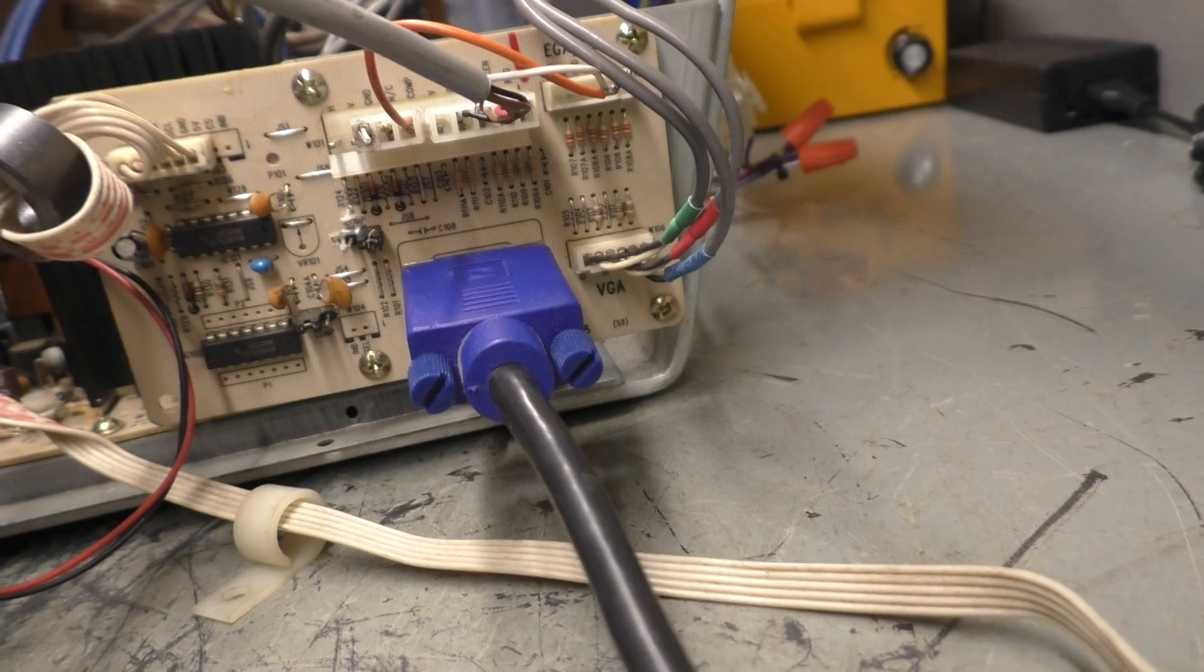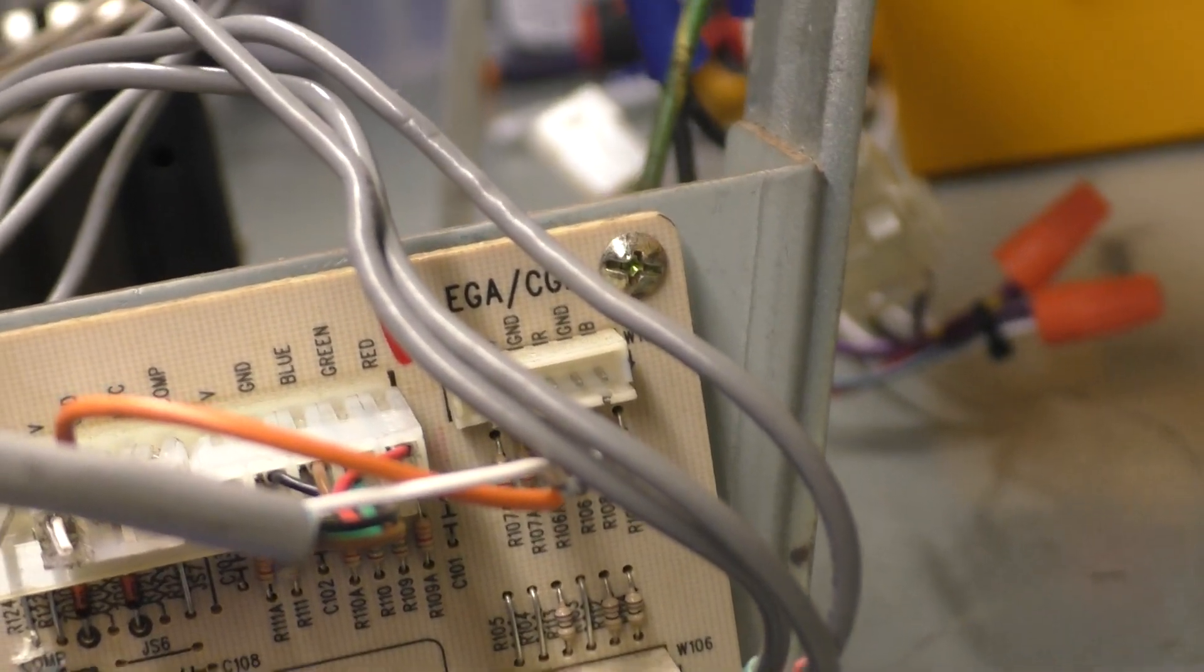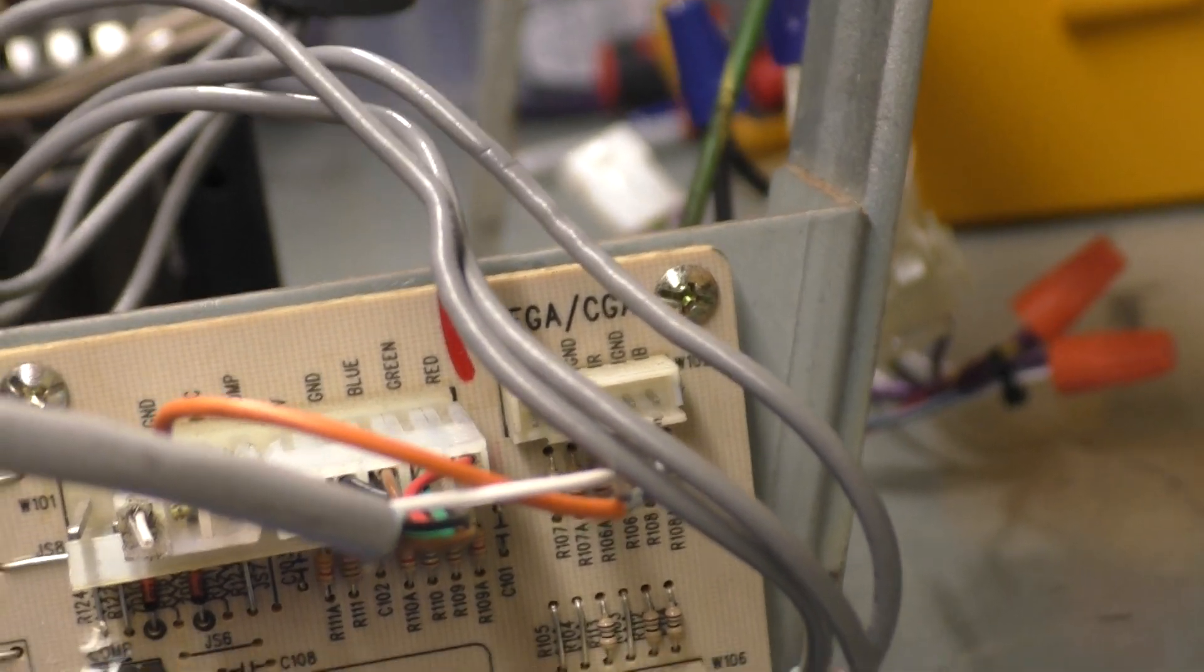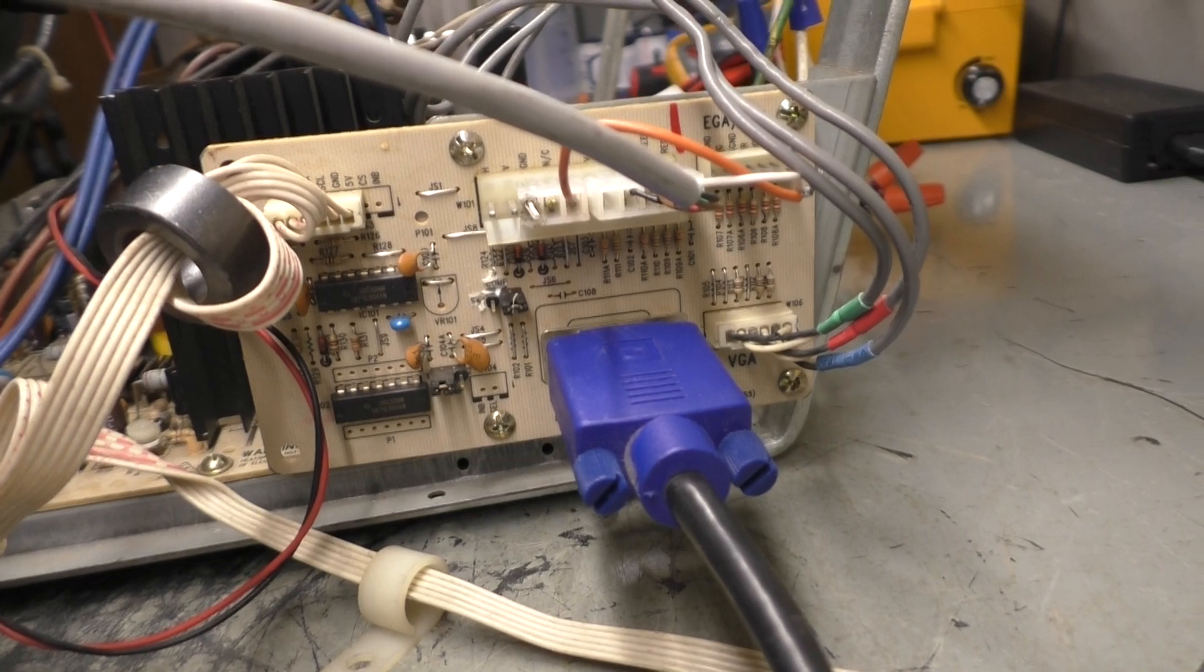So you have a connection here for VGA, and you have a connection here for CGA, EGA, just like the 9200s and 9400s. But unlike those, there is a jumper you have to switch for the sync to work properly.